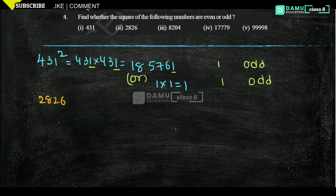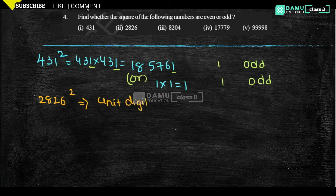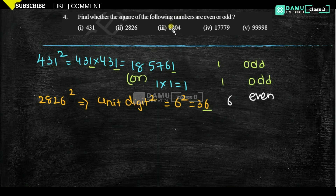Next, 2826 squared. Let's take the unit digit squared, that is 6 squared, which equals 36. The unit digit here is 6. And 6 is even.